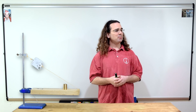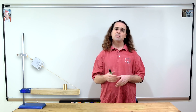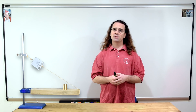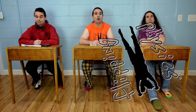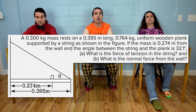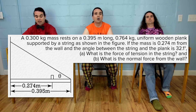Good morning. Billy, please read the problem and Bobby, please translate. Flippin' physics! A 0.300 kilogram mass rests on a 0.395 meter long, 0.764 kilogram uniform wooden plank supported by a string as shown in the figure.